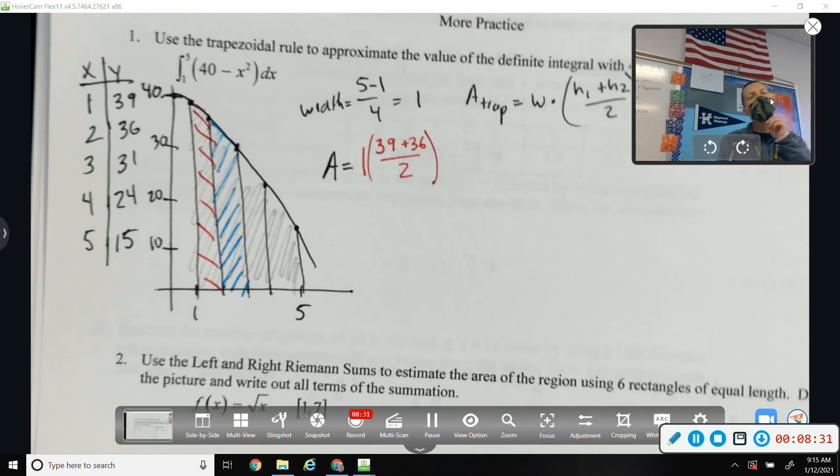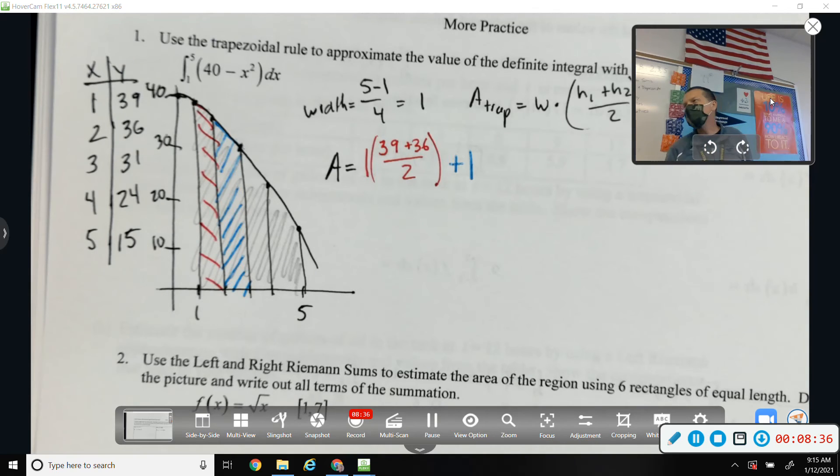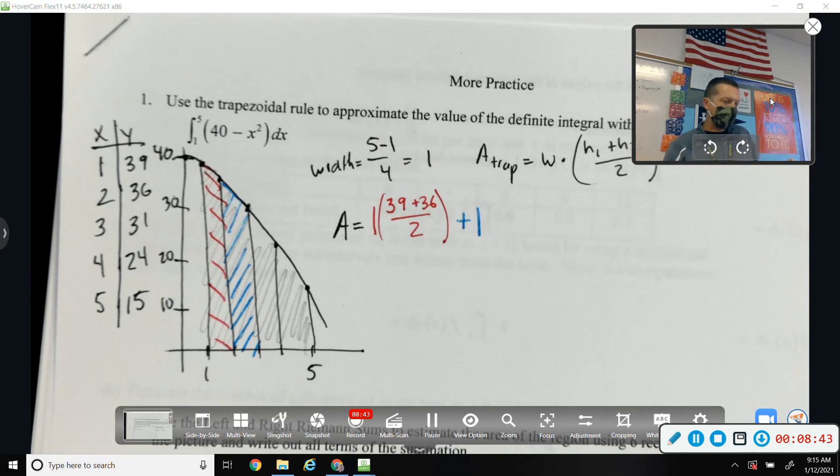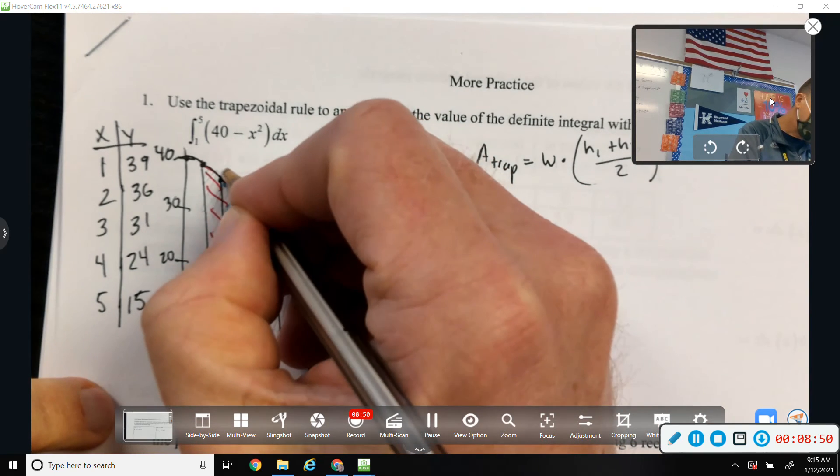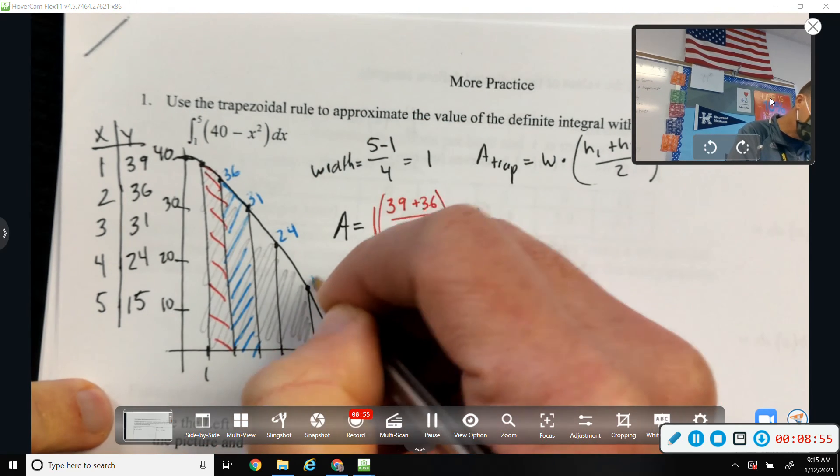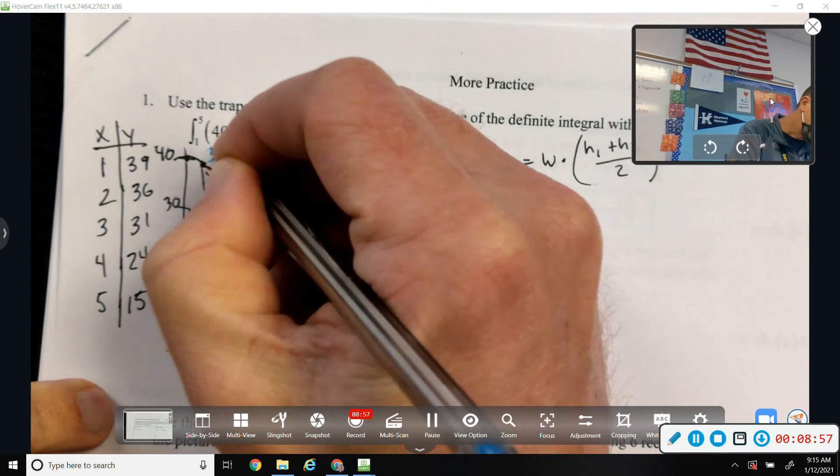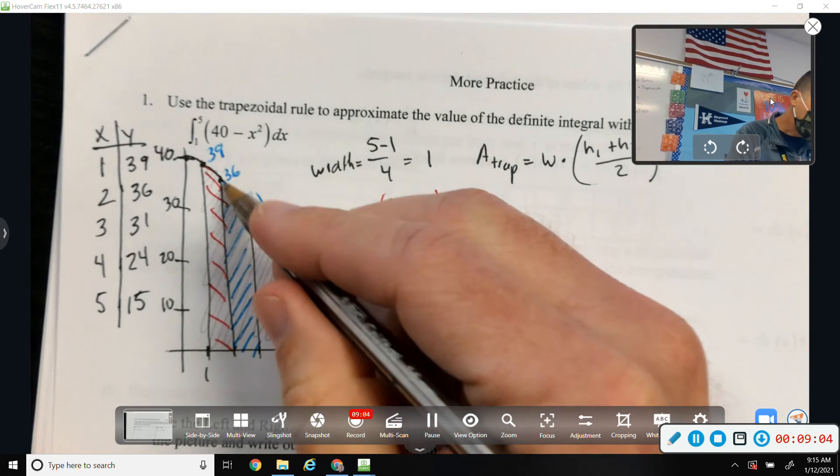Second trapezoid, width is 1. Again, when you see the width is 1 and you want to leave it out, because multiplying by 1 doesn't do anything for me, that's fine. I'm keeping it in there to just show that that's my formula for a trapezoid. Width times average height. So, those two heights, maybe it would have been a good idea to label them. I don't know if that helps you see the heights or if it makes it more confusing. So, 36 and 31.